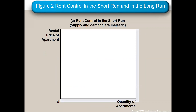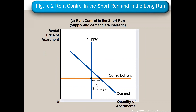Rent control is a price ceiling. In the short run, there's a very small shortage. Supply is inelastic because you're not going to build more apartments or take down apartments in the short run — you have leases and you have to honor them. So even though rents are down and maybe some landlords want to stop renting, they have leases. Even demand is not much greater for a similar reason: in the short run, even though you might see a cheaper apartment, you might already be in a lease and have to wait for it to expire. So in the short run, the shortage is small because supply is inelastic.